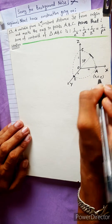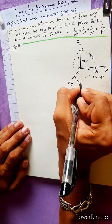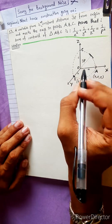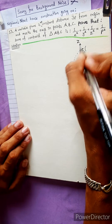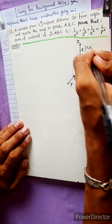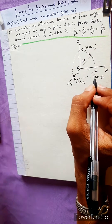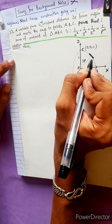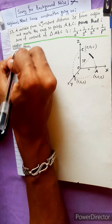The coordinates of the intercept points are: A = (a, 0, 0), B = (0, b, 0), and C = (0, 0, c).